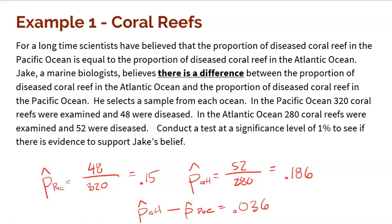I've learned one thing in this class, and that is that samples vary. Just because I'm seeing a difference between two samples doesn't mean there really is a difference — I could just be seeing this because of sampling variability. A 3.6% difference is not a teeny tiny difference, but it's also not really big. That's the whole reason why we need to do the test, to make a decision on what's actually true.